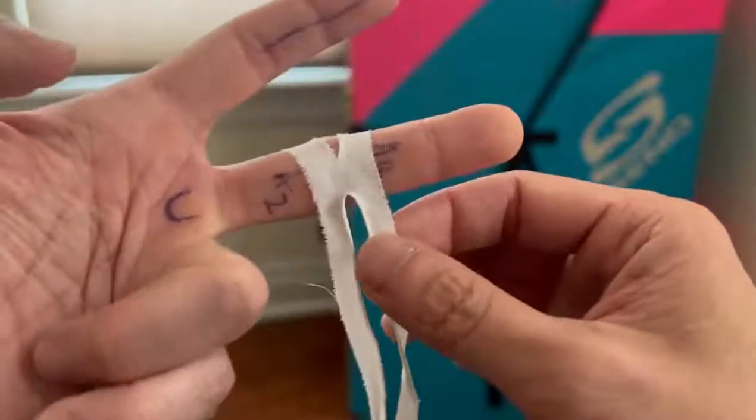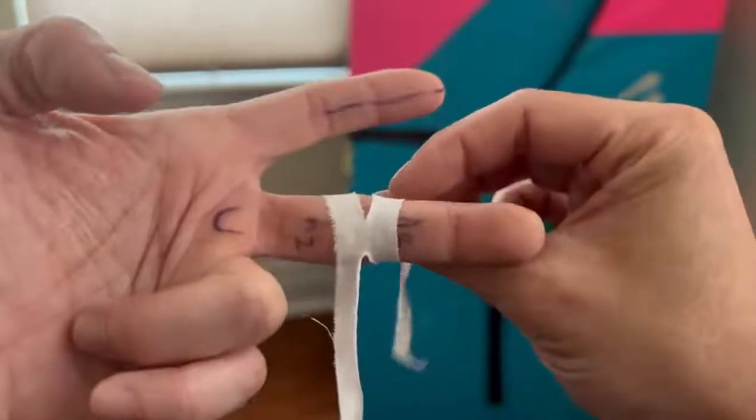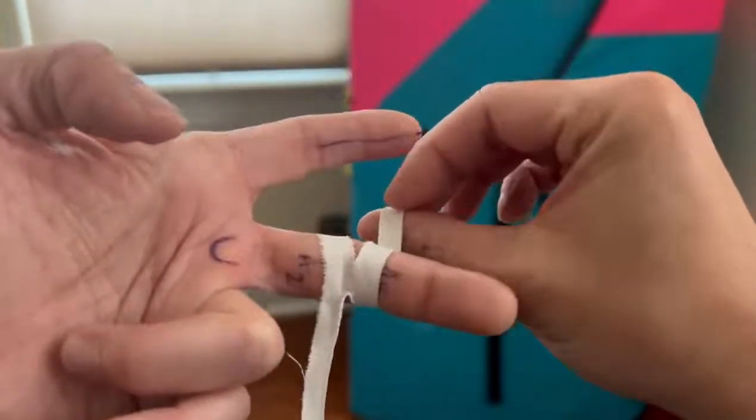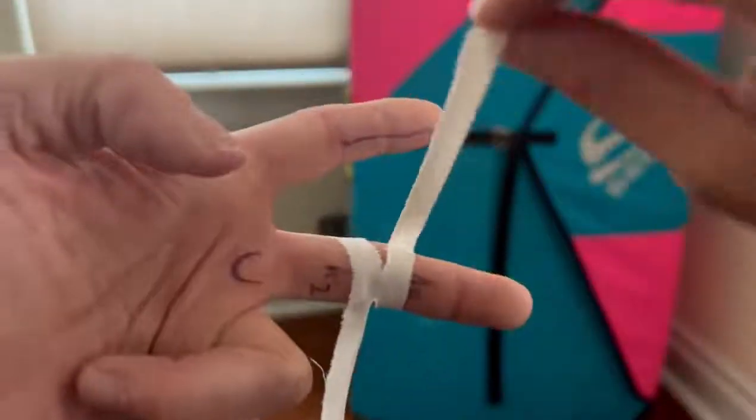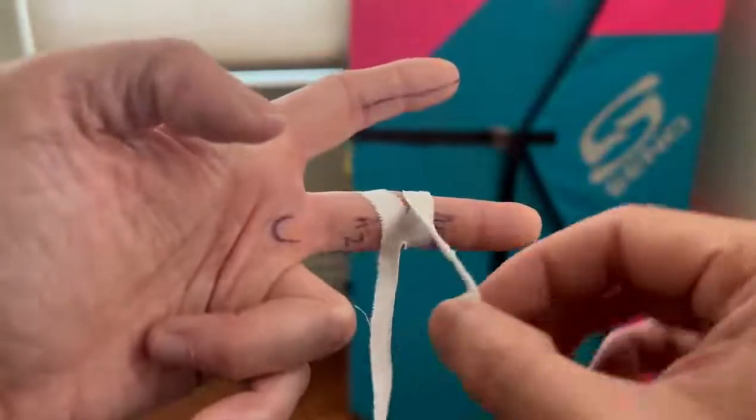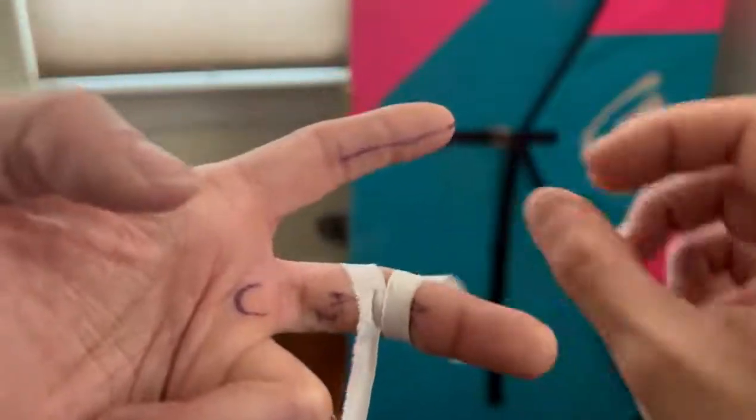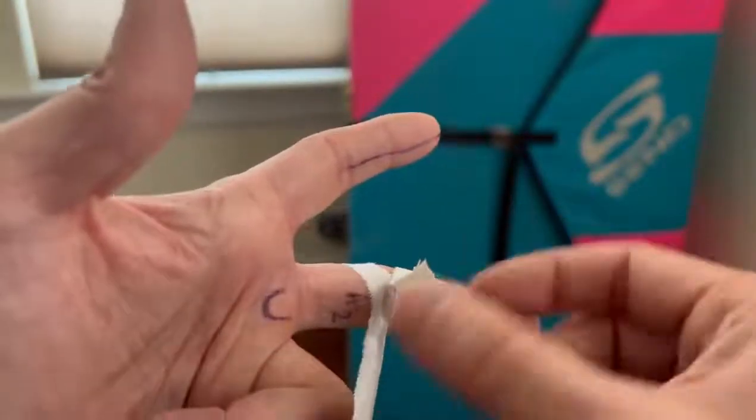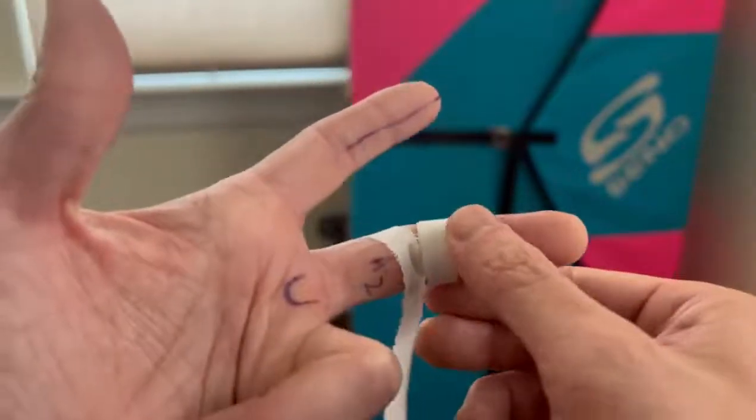And then what you're going to do is you're going to wrap these longer legs right around. And there's no weaving pattern here. So literally all you're doing is tracing the lines that you have with the tape. And then make sure that the tape ends on that back side or the knuckle side.